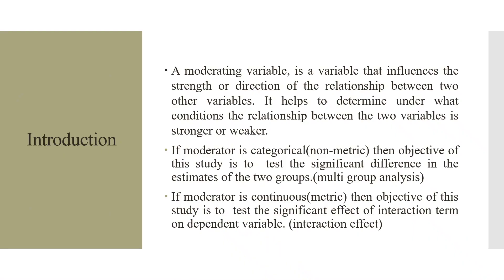A moderating variable is a variable that influences the strength or direction of the relationship between two other variables. It helps to determine under what conditions the relationship between the two variables is stronger or weaker.